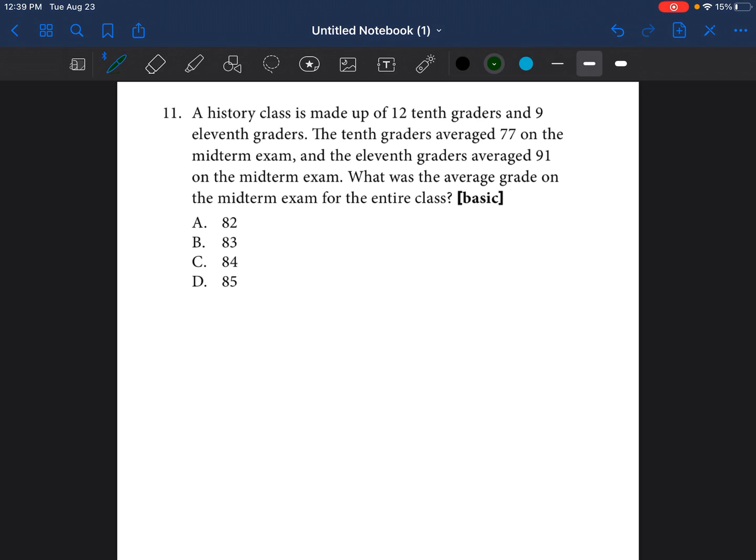So question number 11 says, a history class is made up of 12 tenth graders and 9 eleventh graders. I already see that I'm going to have to start taking notes. I'm dealing with tenth graders and eleventh graders. I'm going to have 12 total students in the tenth grade and 9 total students in the eleventh grade.